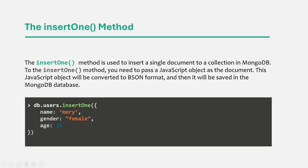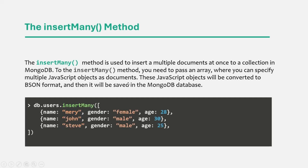So remember: when we want to insert a single document in a collection, we can use the insertOne method, and we have to use this method on the collection name. If you want to insert multiple documents at a time, instead of using insertOne, we can use the insertMany method — using insertMany we can insert multiple documents at a time. This is all from this lecture. If you have any questions, feel free to ask. Thank you for listening and have a great day.